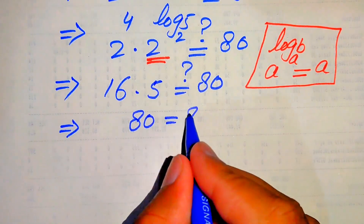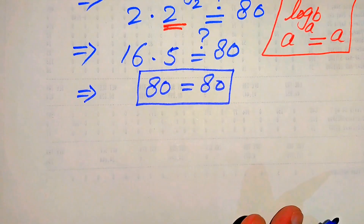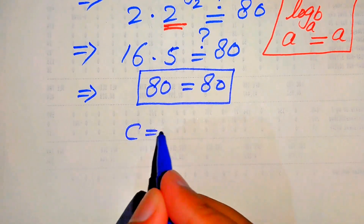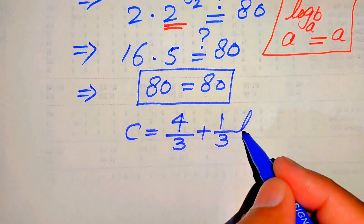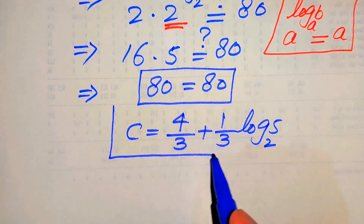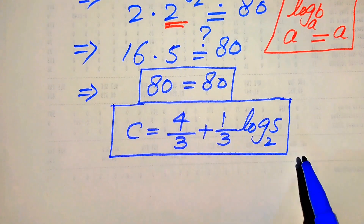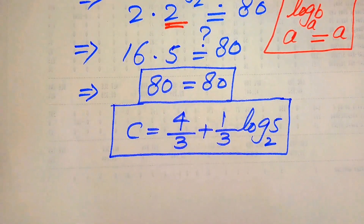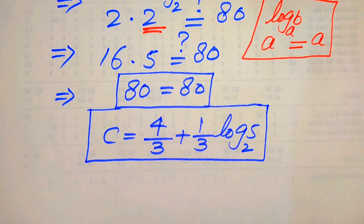We get 80 equals 80, which confirms that C equals 4/3 plus 1/3 times log 5 base 2 satisfies the original equation. This is our final answer. If you have another method in mind, please write it in the comment section. Thank you for watching — please subscribe to my channel for more videos.